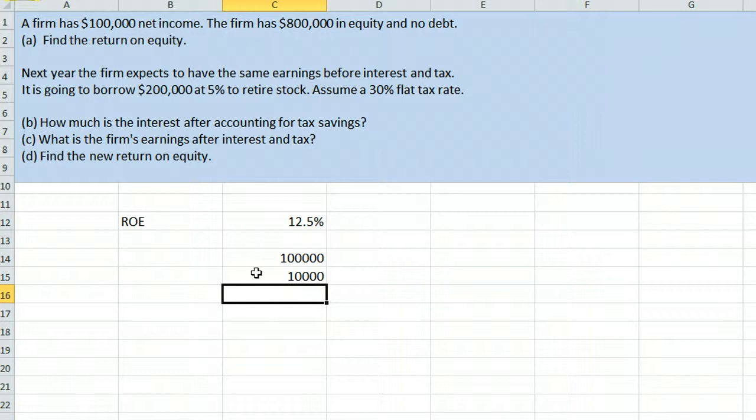However, because there is a 30% tax rate here and the interest is tax deductible, effectively you're only paying 70% of the interest. So $7,000 is the interest after we account for the fact that some of the interest we're paying is going to be tax deductible.